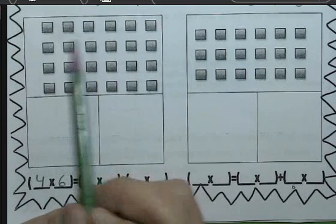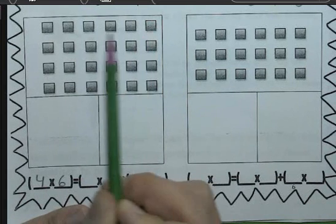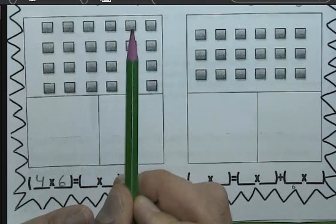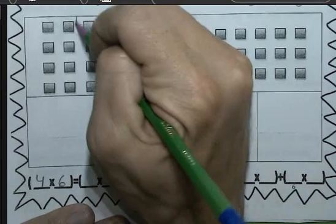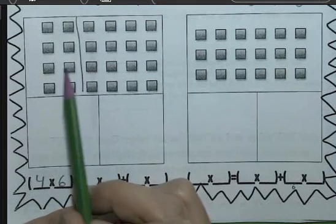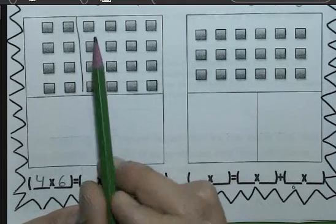So now if I look, I have 6 as my larger number, so I could break this down in any number of ways. So let's break this down. I know 2's are an easy number to multiply, so I'm going to break it into a 2 by 4 array and a 4 by 4 array.